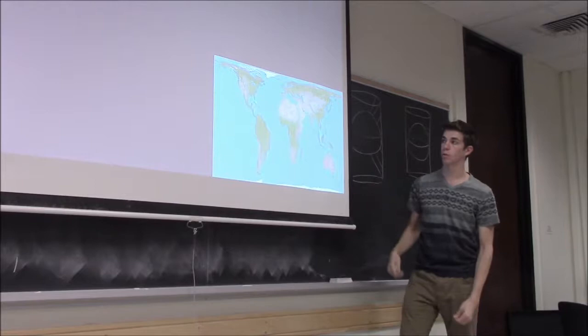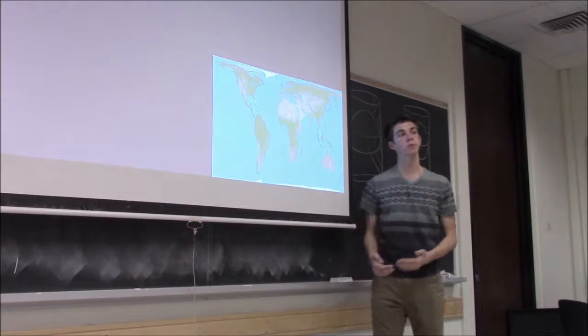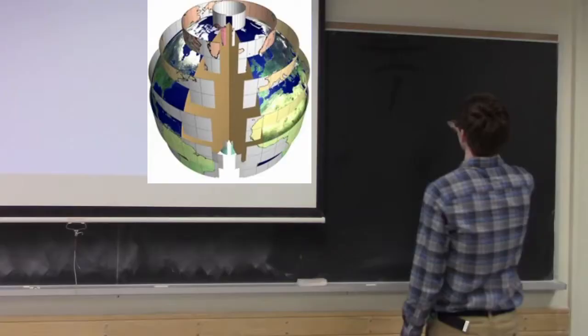And if you notice, you do have some shape distortion, but area is represented much better. In this example, you can see that Greenland is a much more appropriate size compared to Africa, the same being true for Australia and Alaska.